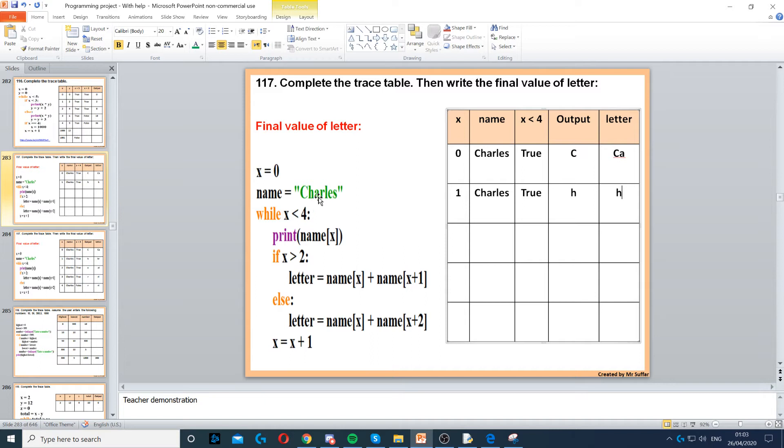The R, because 1 plus 2 is 3, and position 3, index 3, is R. Then we go to X equals X plus 1, so X becomes 2. Then name stays as Charles. 2 is less than 4, that's true.